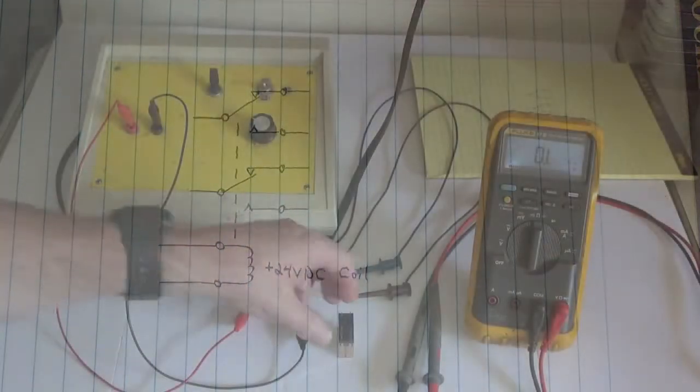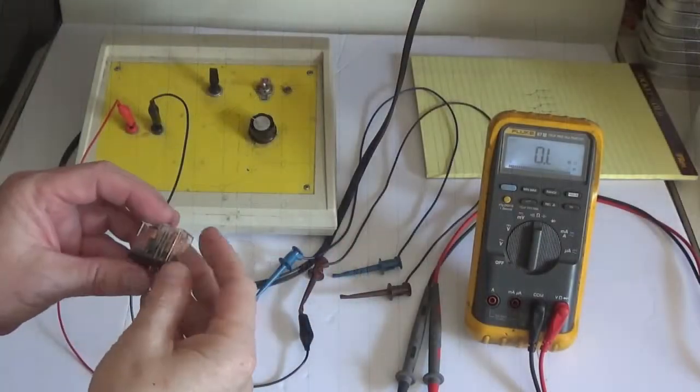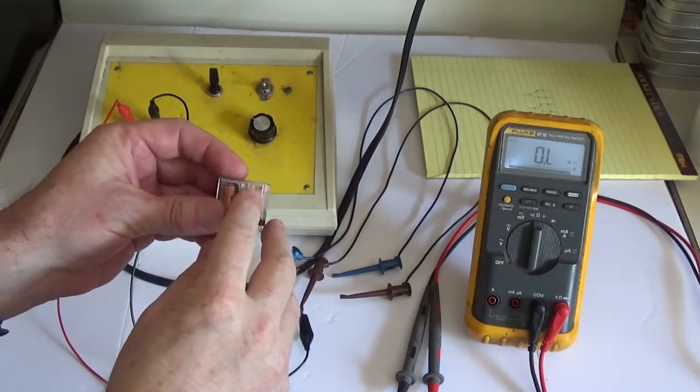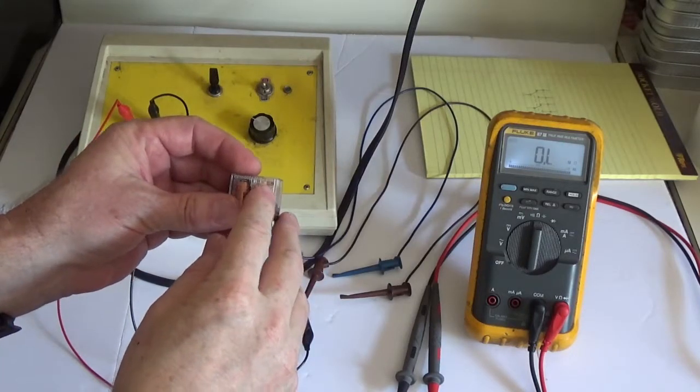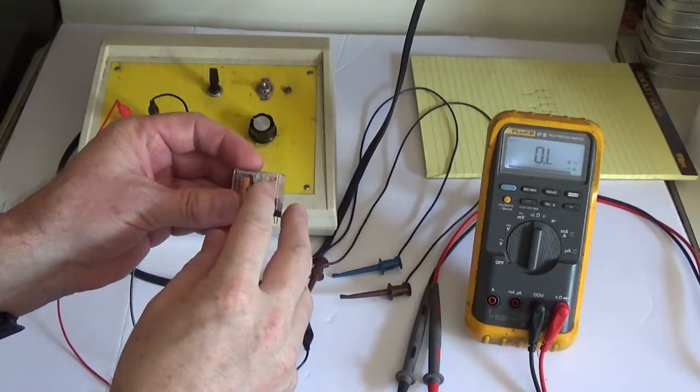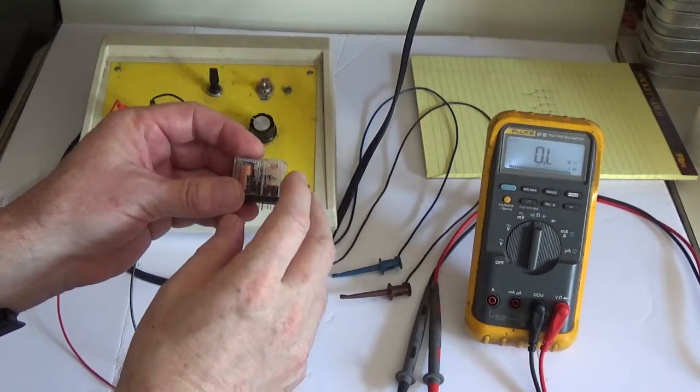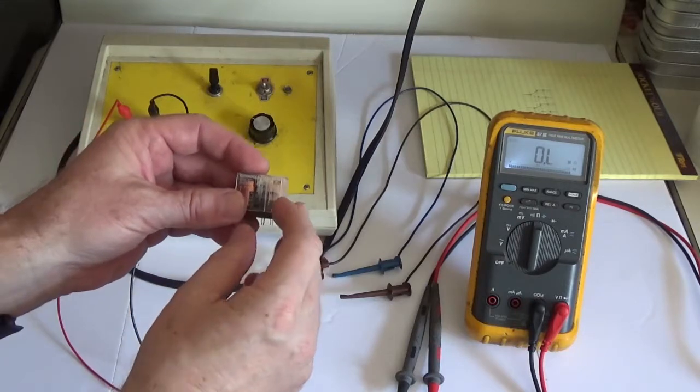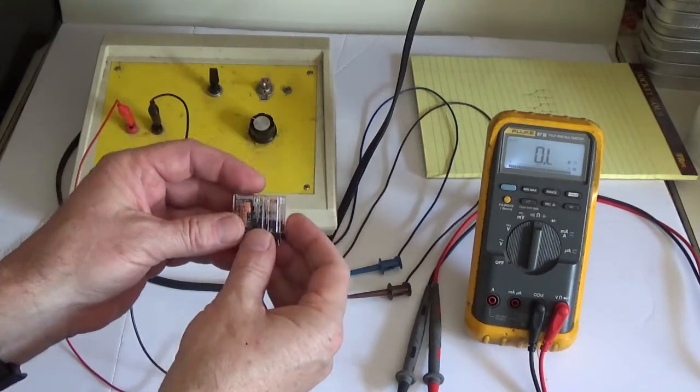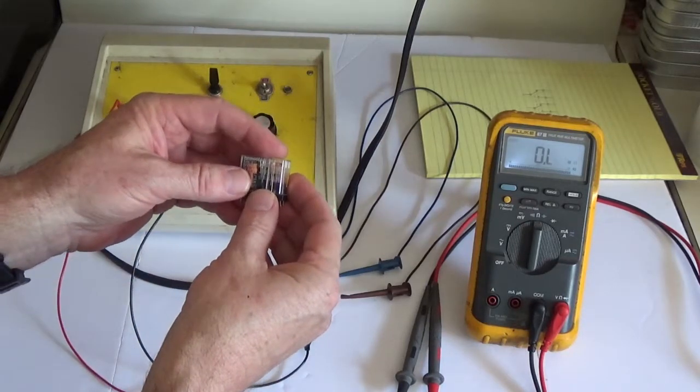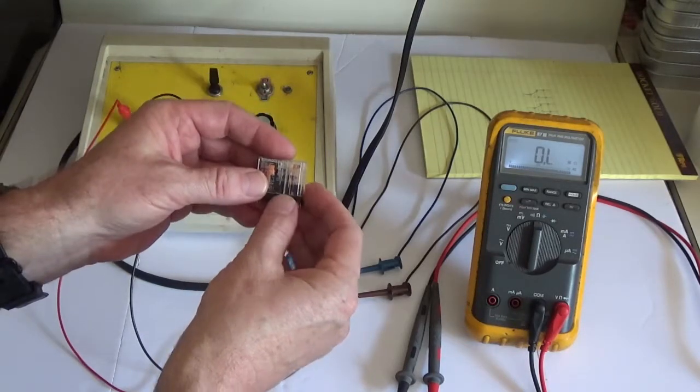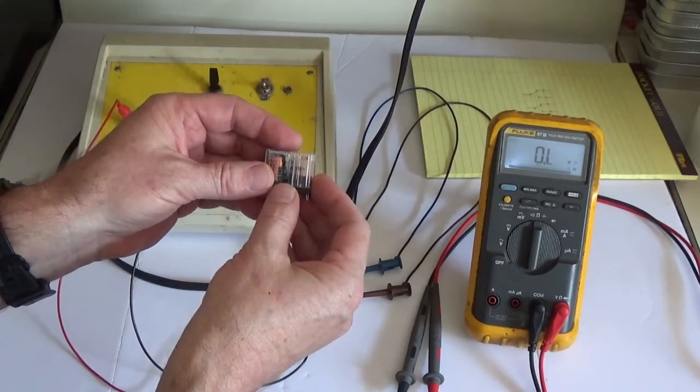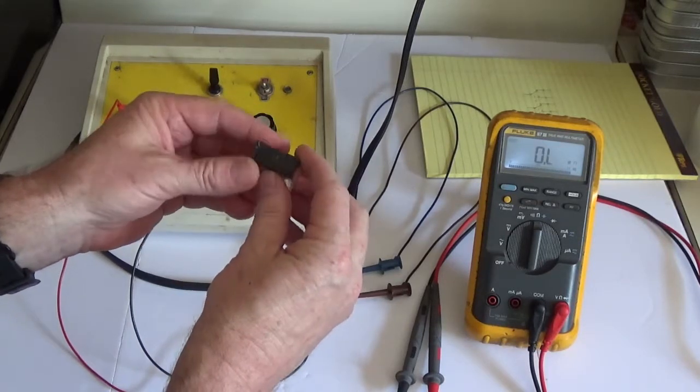Now what happens to these relays normally is that over the years the contact resistance between the normally closed or the normally open or both will become too high. They won't fully conduct. In that case, the relay either needs to be taken apart and cleaned or replaced. Here we're going to check this relay with this little setup right here.